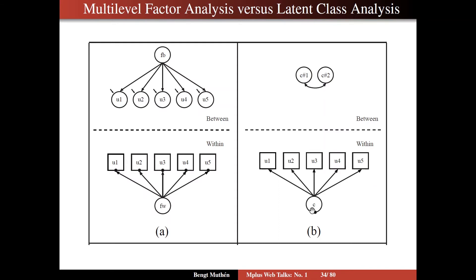You have the nominal latent class variable C. Here's a case where we have three categories — three latent classes for C — which means that you have two intercepts, or means if you want to describe them that way. One less than the number of categories because the probabilities have to sum to one. So you get two random intercepts, which then are continuous latent variables that vary across the clusters, be it schools or communities. And we can make them correlated. And if there are many classes, there will be many random intercepts, and you may want to simplify things by putting a factor between them to describe the random intercept covariation by a single dimension instead of many.